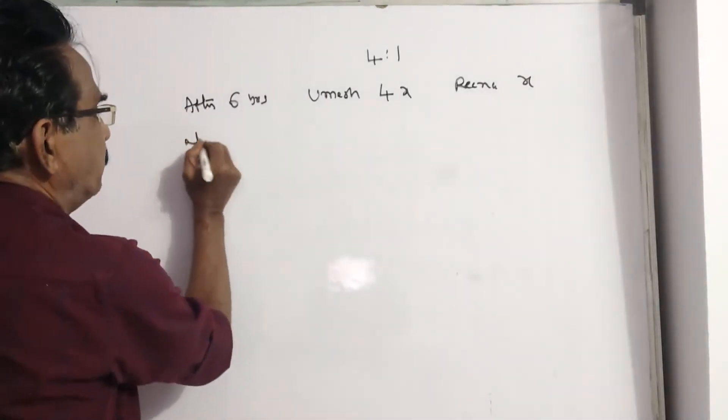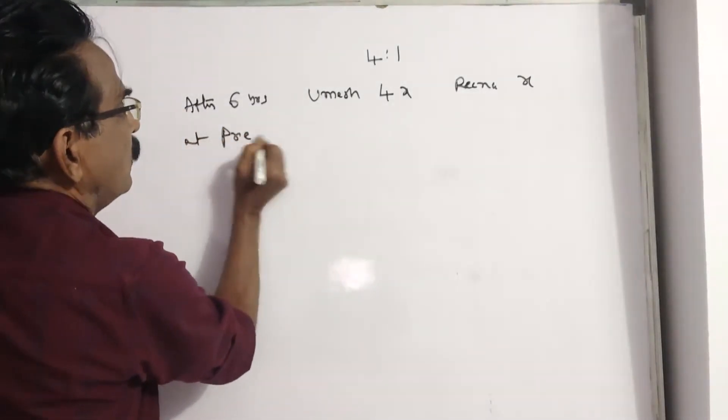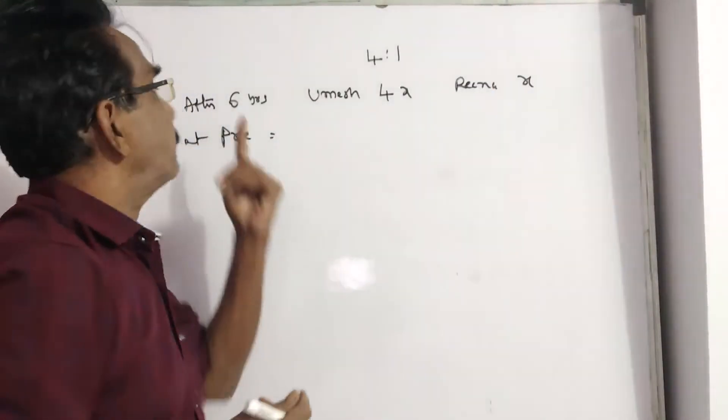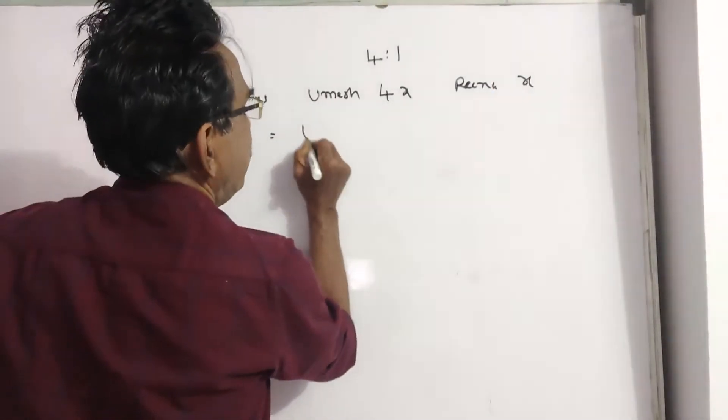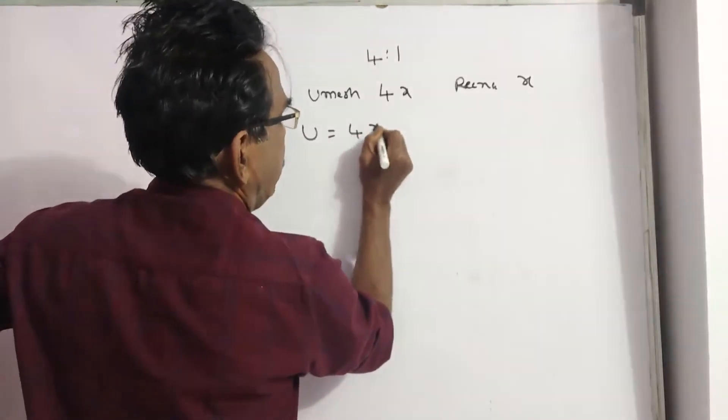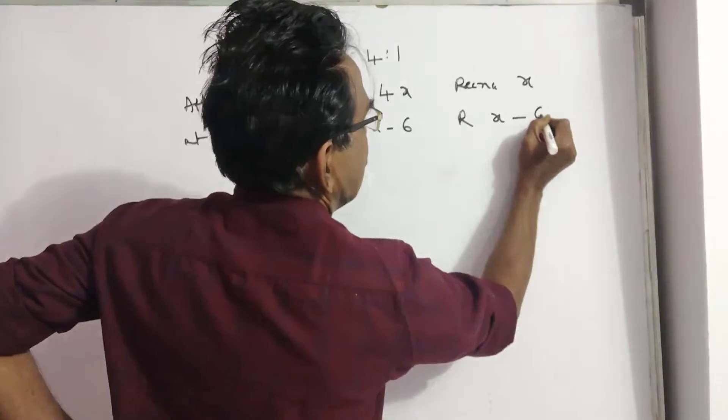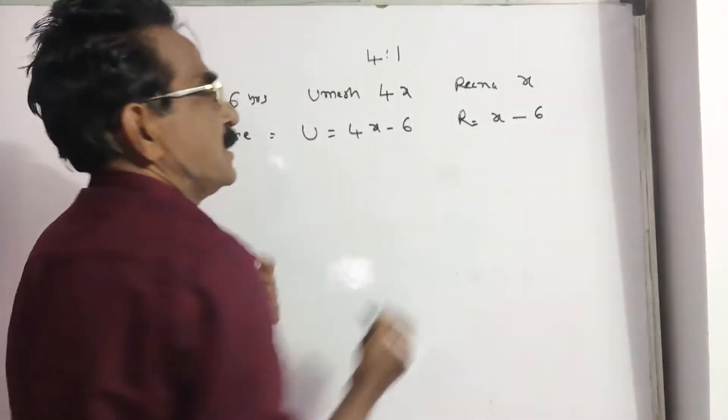At present, this is after 6 years. Present means you have to subtract 6. So Umesh is equal to 4x minus 6 and Rena is x minus 6.